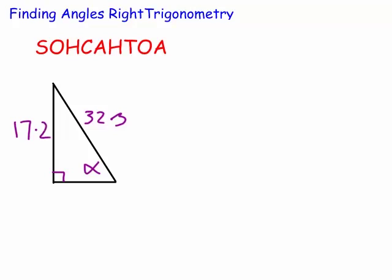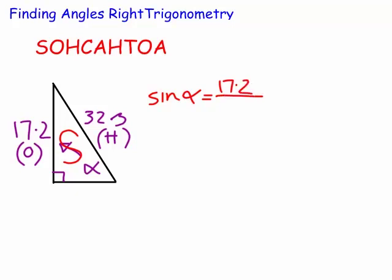Well, what we would do is we would say, okay, what sides do we have? Well, you can see here we've got the opposite and the hypotenuse. Some people just put O and H next to them. And I would put an S in my triangle to remind me I'm going to use sine. So, we're going to go, okay, well, the sine of the angle, which in this case is alpha, is equal to the opposite, which is the 17.2 over the 32.3.